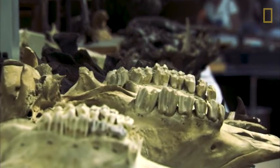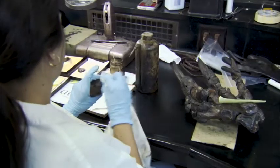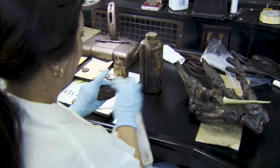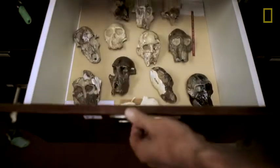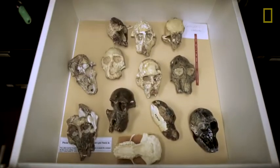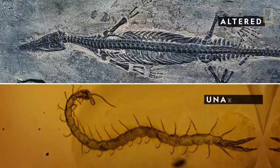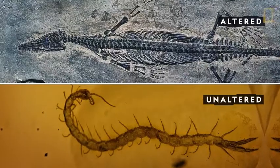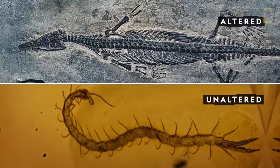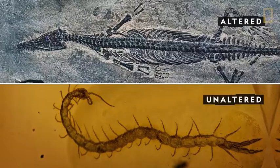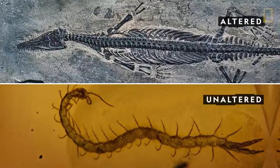Fossilization, or the process of preserving organisms in stone, can occur in countless ways. These methods are largely grouped depending on whether the organisms are altered during the fossilization process.